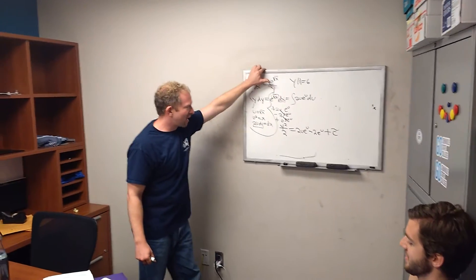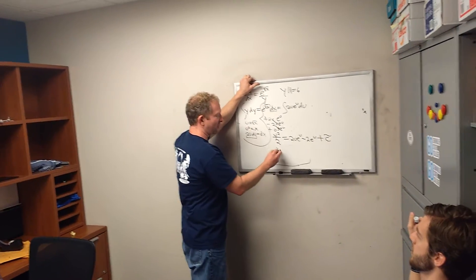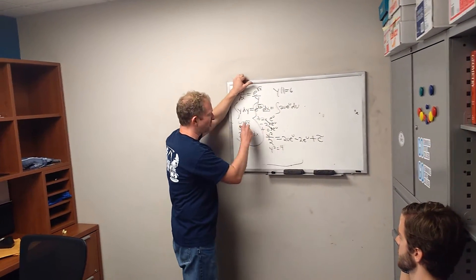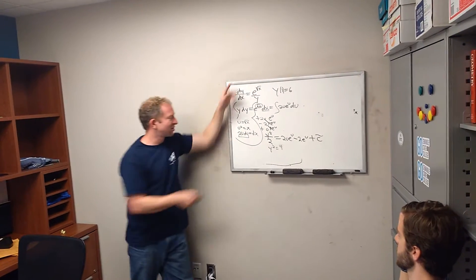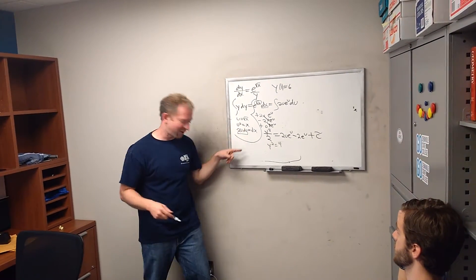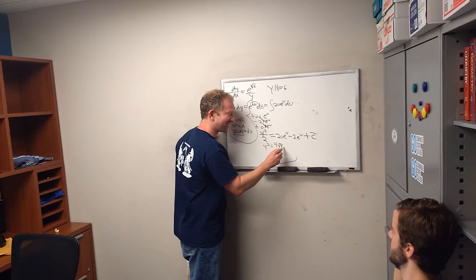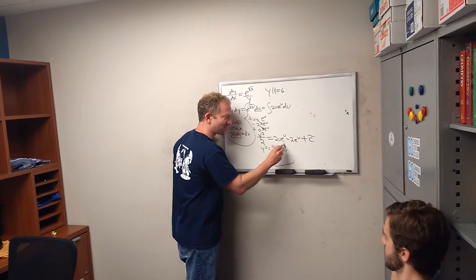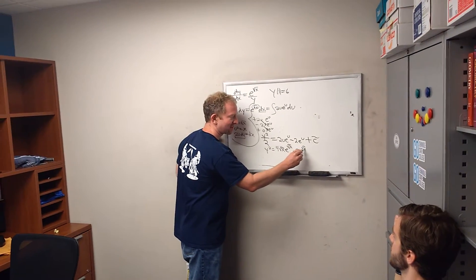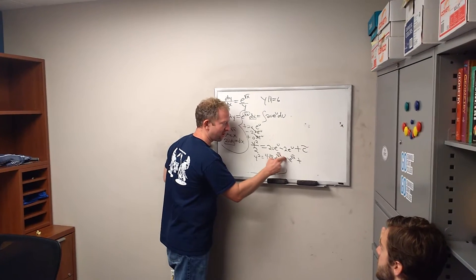And I guess we should solve for y, so multiply by 2. So we have y-squared equals 4. And u is the square root of x. Let's go ahead and replace all of the u's with square roots of x. So this is square root of x, e to the square root of x, minus 2e to the square root of x, plus 4.